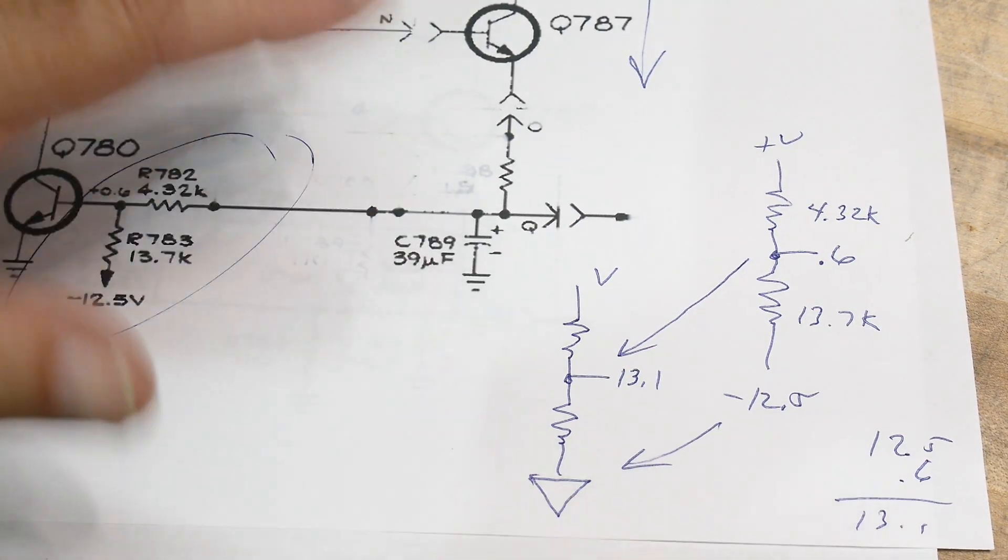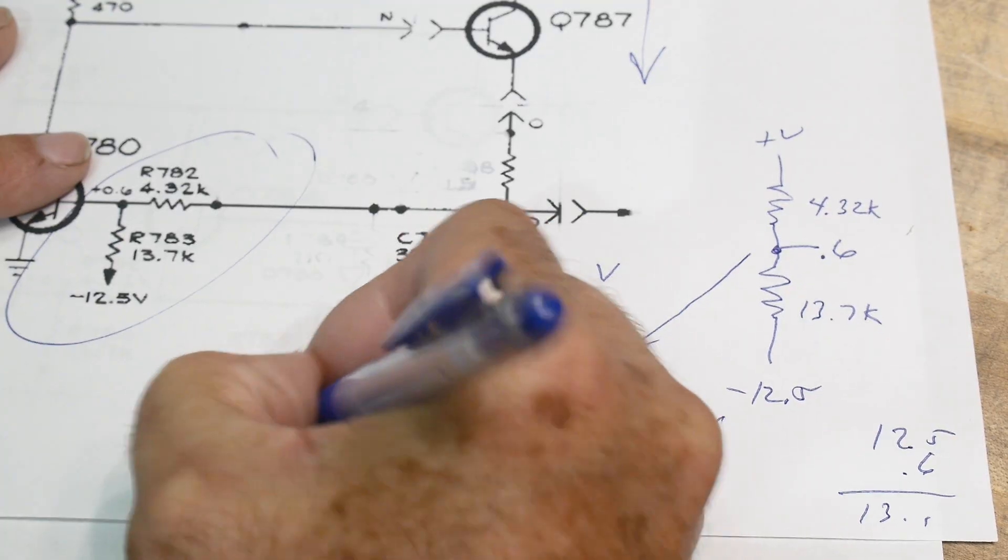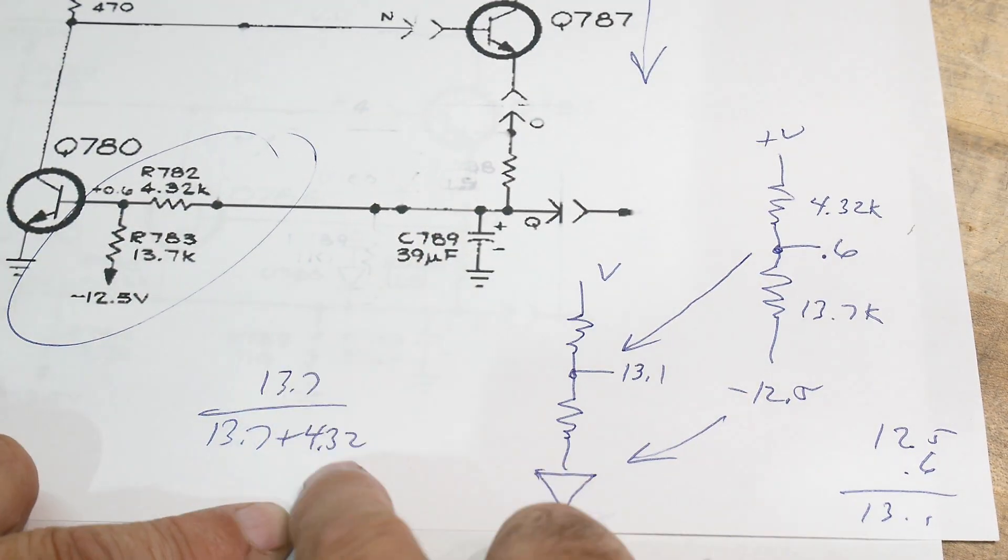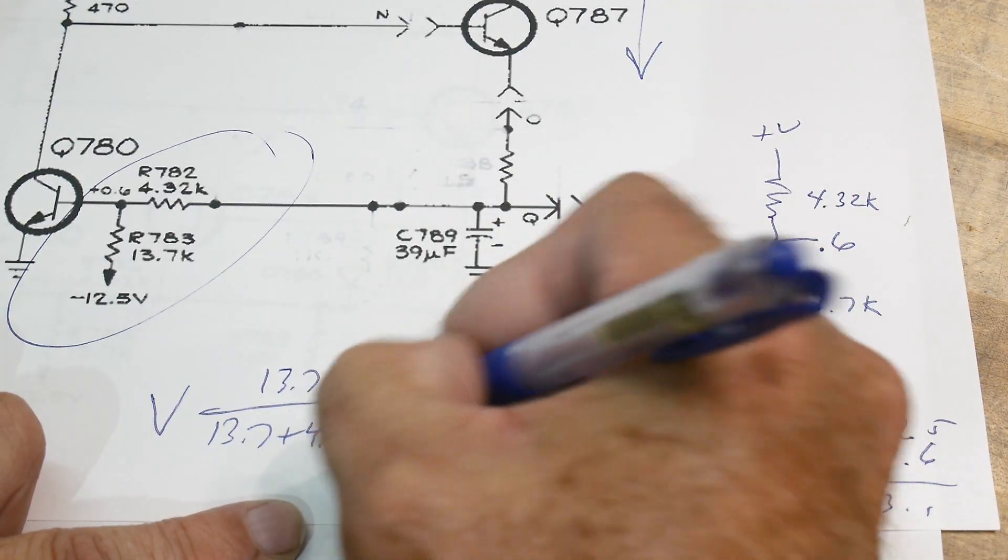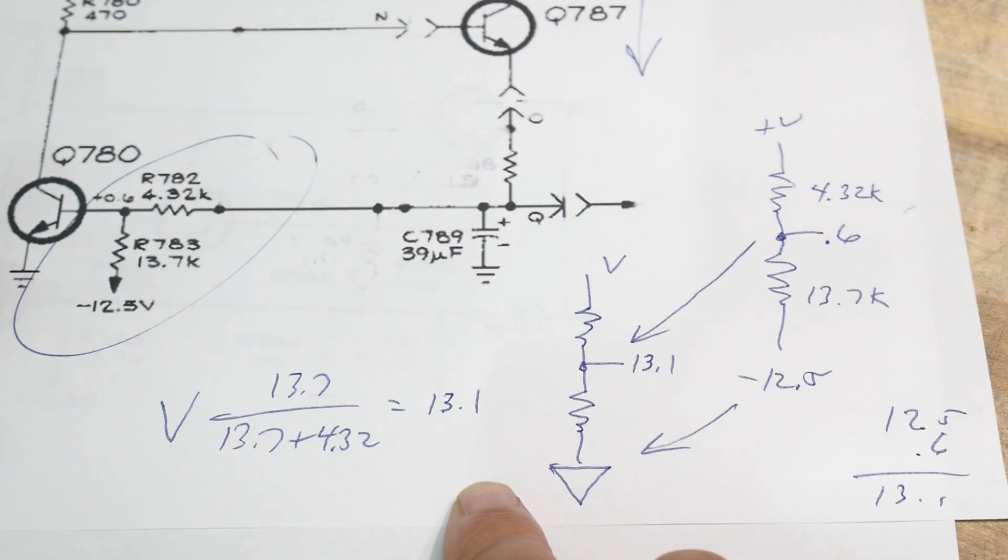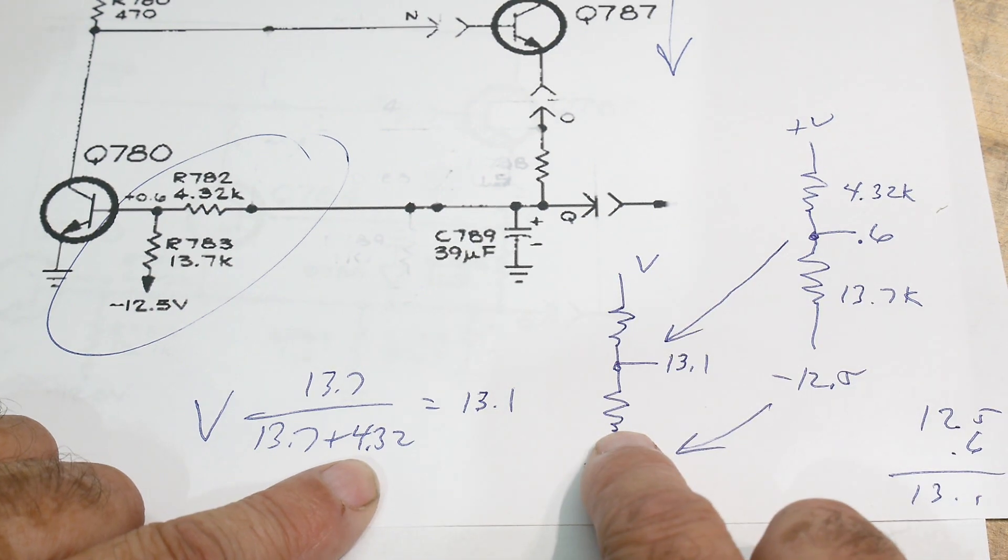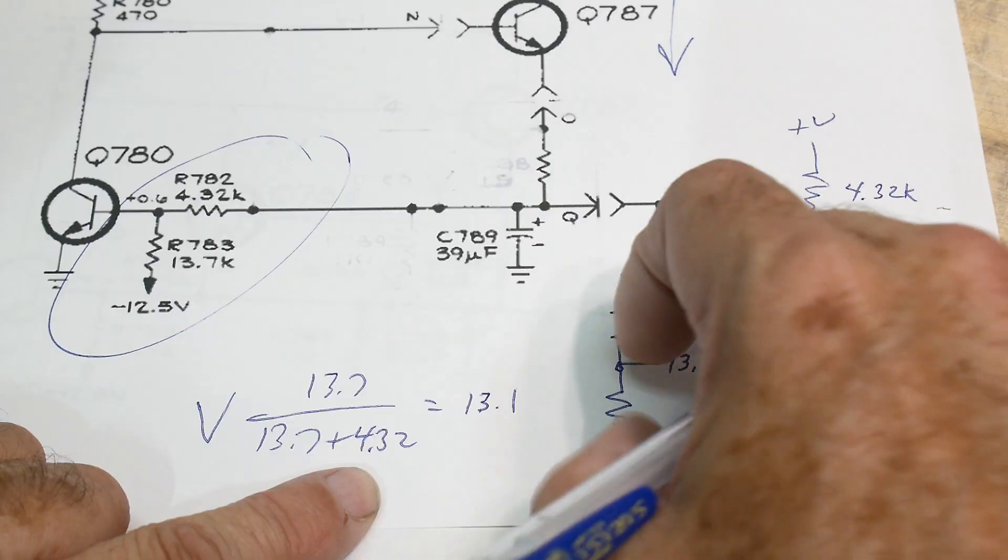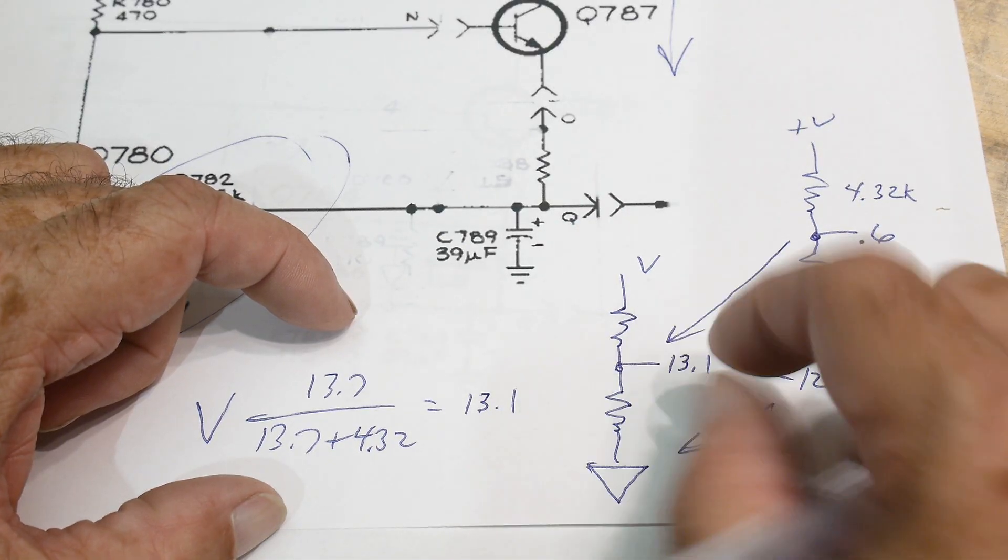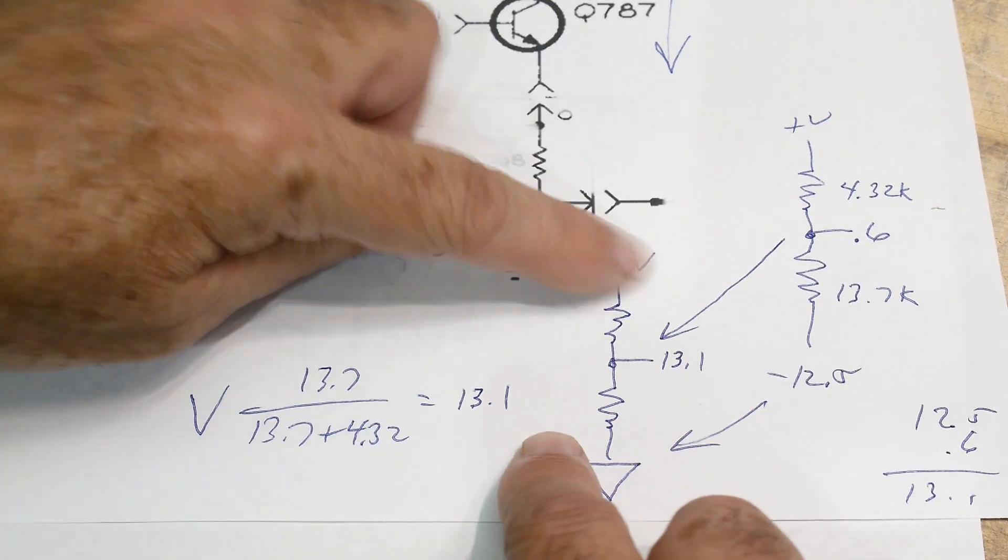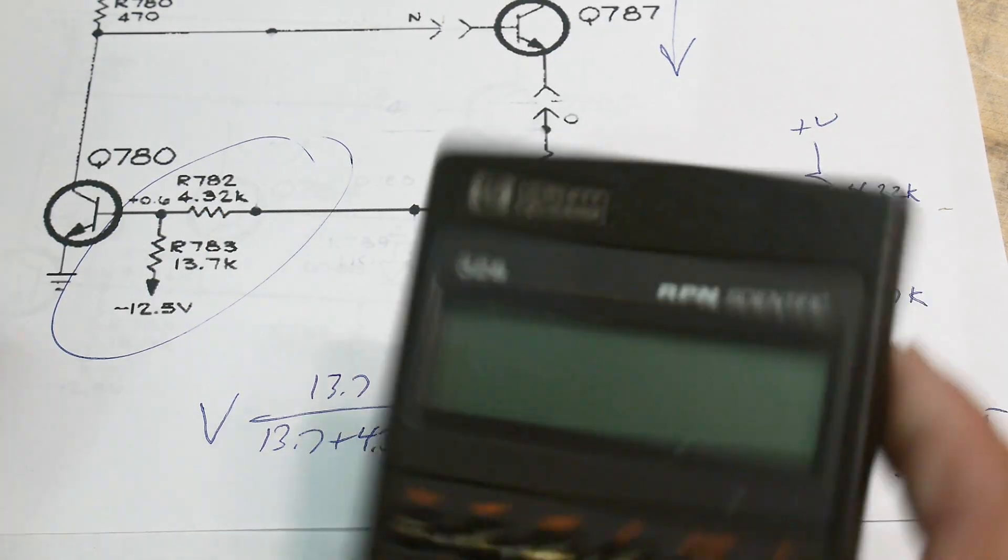We want to know what the voltage is here. We know that if we have a ratio, we're going to have 13.7 divided by 13.7 plus 4.32. That ratio is this voltage times V. This is going to be 13.1. Did you see how I did that? The total resistance is in the denominator, and then this portion of the resistance here is our numerator. So that's going to be our fraction, this to that. That fraction times this voltage is going to be 13.1, so this is the equation we want to solve.